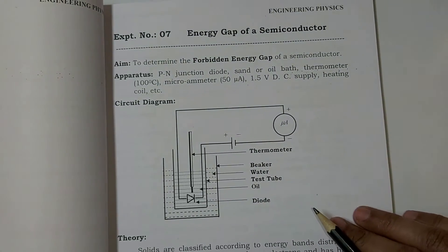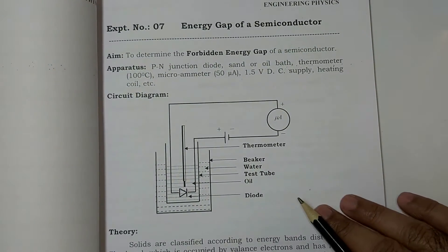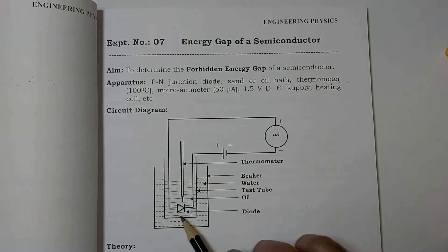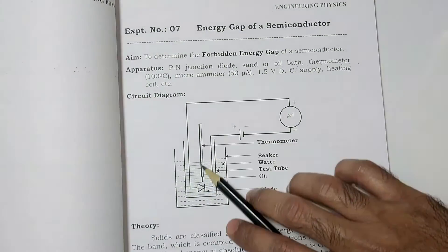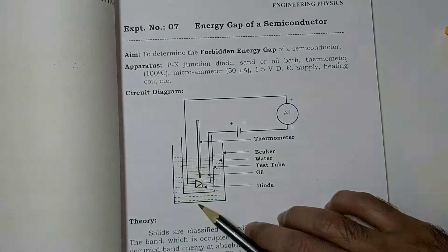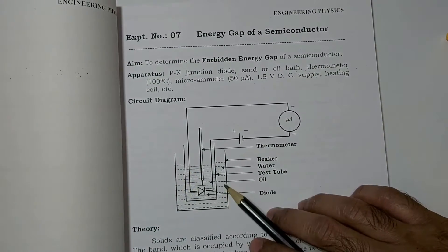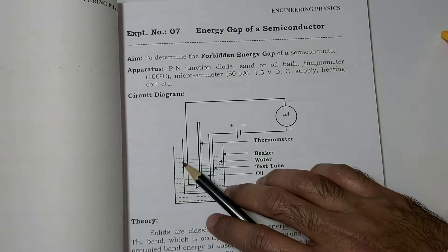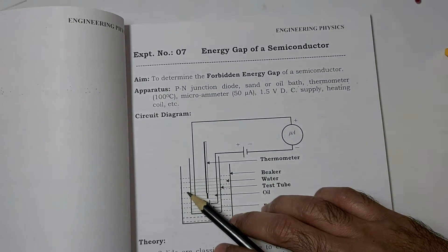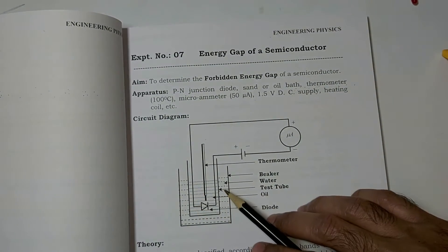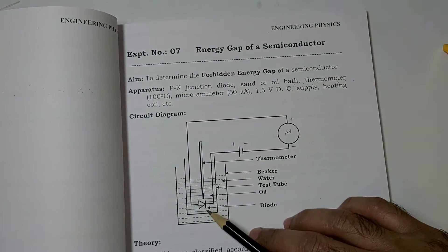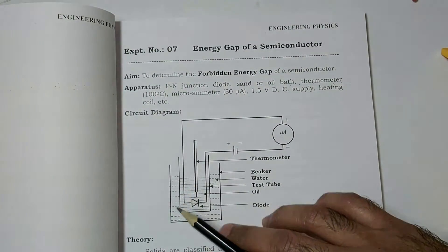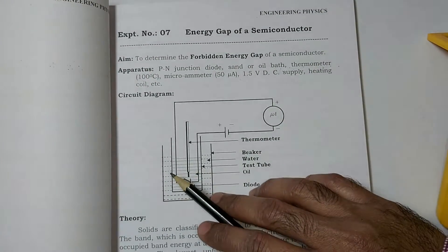This is the circuit diagram of the energy gap of semiconductor experiment, which we will use to make connections. As seen in the diagram, there is a PN junction diode and a thermometer. Instead of an oil bath as shown, we are going to use a sand bath. The purpose of the sand bath or oil bath is to provide thermal energy indirectly — because if we heat the material directly it will burn off. For indirect and uniform heating we use a sand bath.